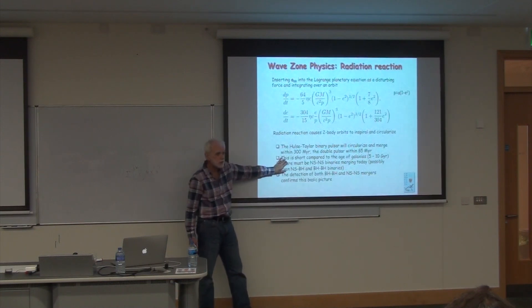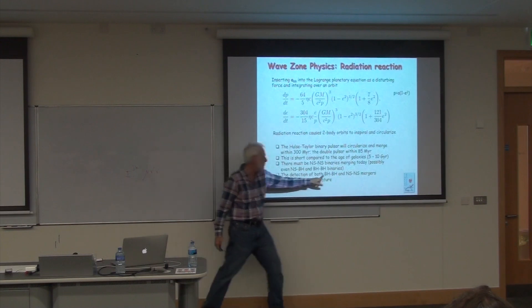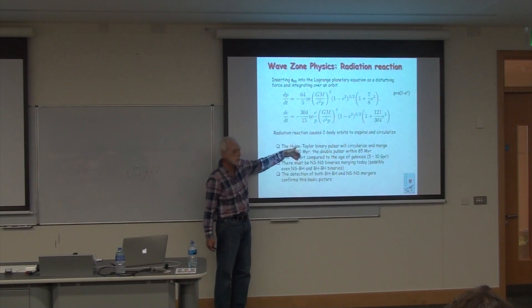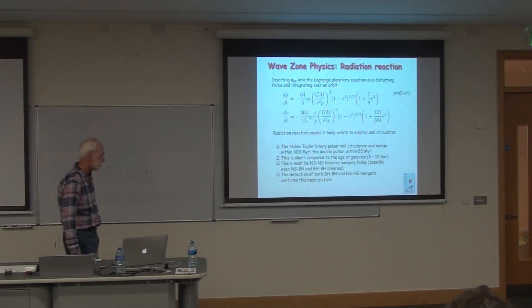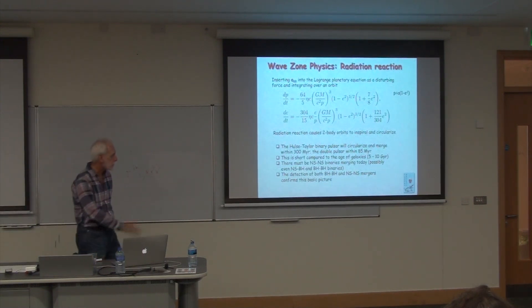For a system that reaches LIGO band, you get eccentricities of order 10 to the minus 6 or 10 to the minus 7. That's about as circular as it gets. Unless the system gets perturbed by, say, a third body close to merger, then that's a different story. For example, you can calculate, and you'll do that calculation this afternoon, for the Hulse-Taylor binary pulsar, how long it takes, given these formulas, for the semi-major axis of the system to go from whatever it is today to zero, for the thing to merge, so the two bodies combine. For the Hulse-Taylor binary pulsar, that's about 300 million years. For the double pulsar, it's shorter, it's about 85 million years. Seems like a long time, but that's short compared to the age of galaxies, five to 10 gigayears. So you might expect mergers to occur today in a galaxy like the Milky Way or in other galaxies beyond the Milky Way. So the upshot is that there must be neutron star-neutron star binaries merging today and possibly even neutron star-black hole and black hole-black hole binaries.